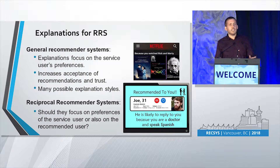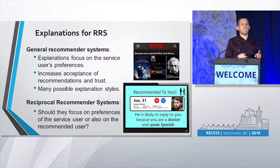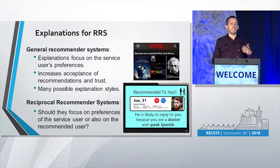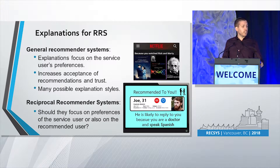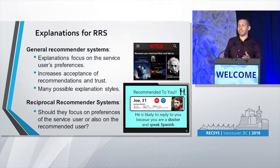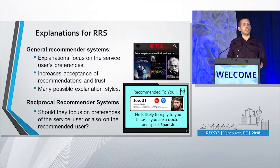Going back to explanations — explanations in general recommendation systems have become very popular, and usually these explanations focus on the service user's preferences, explaining why he presumably would be interested in the recommendation. These explanations have been shown to achieve several goals, such as increasing the acceptance of the recommendations and trust of users in the system, and these explanations come in many forms and styles. However, to the best of our knowledge, explanations for reciprocal recommender systems have not been investigated yet. And specifically, in reciprocal recommender systems, a very important part of the explanation could be explaining why the recommended user will be interested in the service user. And the question we ask is, how would this contribute to the effect of the explanation?